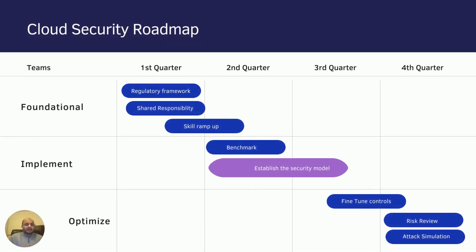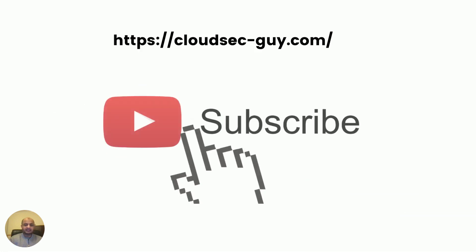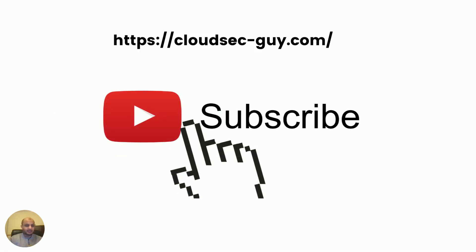To wrap up, this roadmap covers the three phases — Foundational, Implement, and Optimize — with the key areas I would focus on based on my experience. You can ping me if you want the model, or of course build your own — but these are the minimum things I'd definitely recommend. I hope this was helpful. Please subscribe to my channel, like this video if you found it useful, and check out my blog and website. Thank you and see you in the next video.